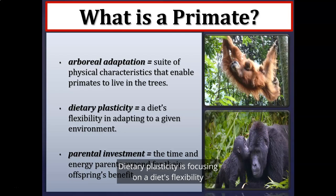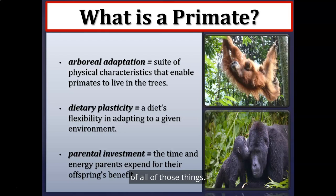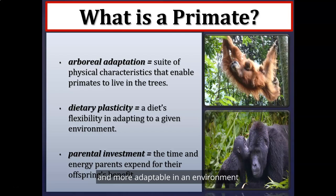Dietary plasticity focuses on a diet's flexibility and adapting to a given environment. Some primates will specialize in certain food types: folivores focus on vegetation, frugivores on fruits, gumivores on tree gums, and omnivores eat a variety of all of those things. Primates are unique in that they can switch dietary food sources in times of shortage, making them more flexible and adaptable.